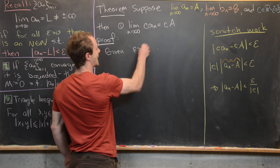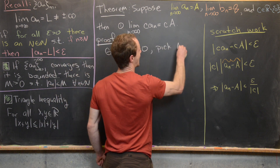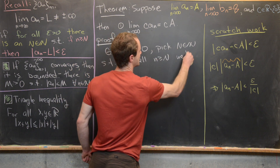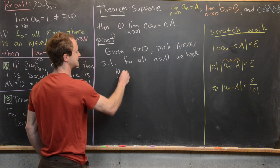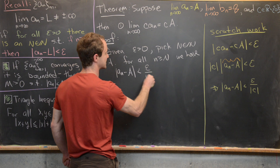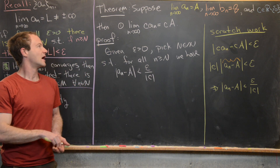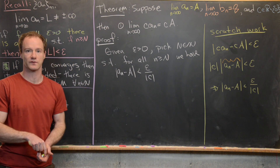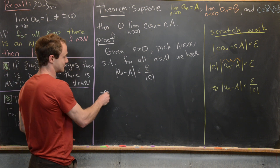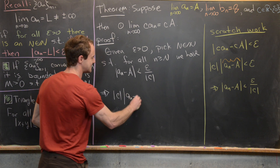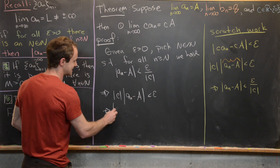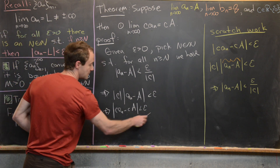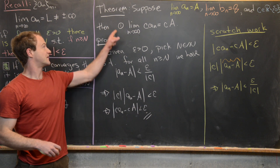Formally: given epsilon > 0, pick capital N such that for all n ≥ N, |a sub n − a| < epsilon / |c|. This is possible because a sub n converges to a. Then |c|·|aₙ − a| < epsilon, which means |c·aₙ − c·A| < epsilon — exactly what we needed to prove the first algebraic property.